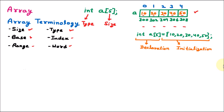The next term is base or base address. When you declare an array, it starts at a first address — let's say 300. Addresses keep adding: 302, 304, 306, 308, because we are using integer (2 bytes). The first block address where the first element is stored is called the base or base address. So the base address of this array is 300.